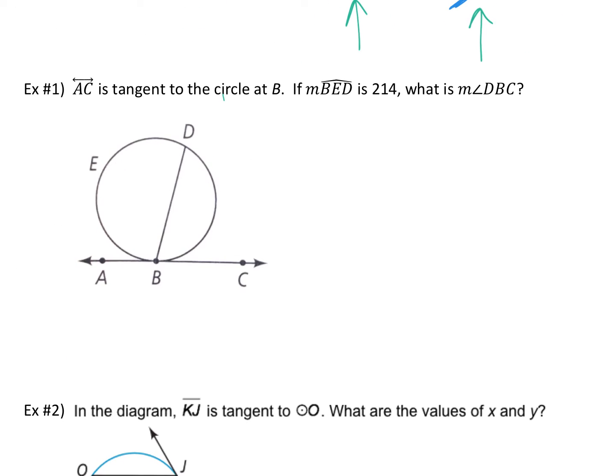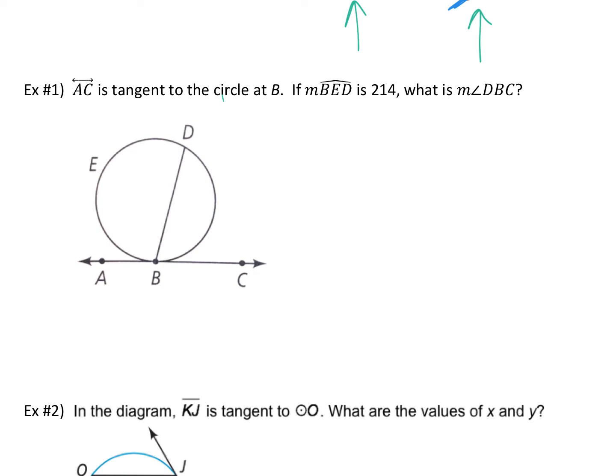Okay, so take a look at this. It says AC is tangent, meaning this B is your point of tangency. It says if the measure, this is supposed to be an arc, the measure of arc BED. So take a look at what arc that is. BED is this arc. That arc is 214 degrees. It says what is the measure of angle DBC?